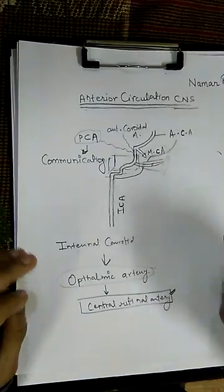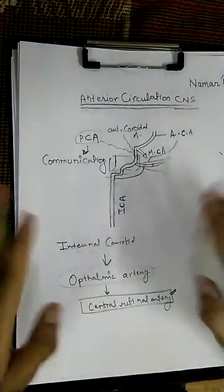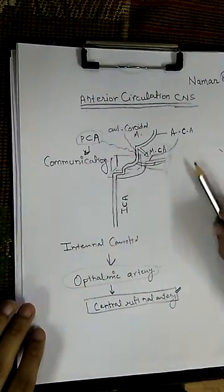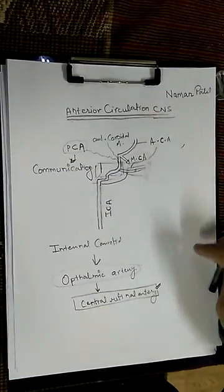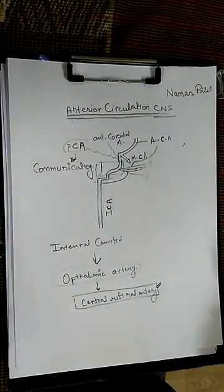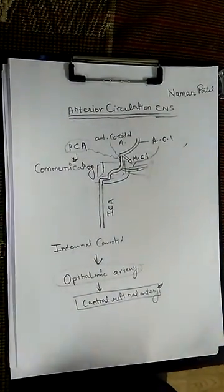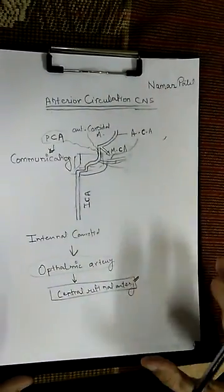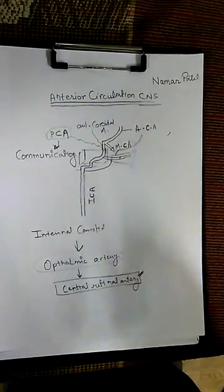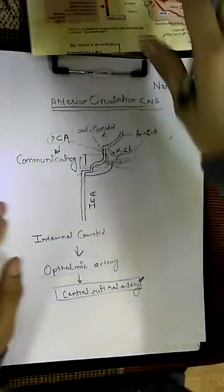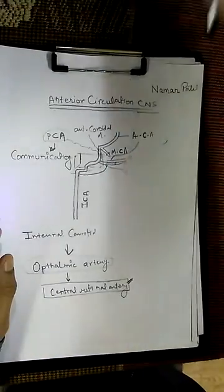All of this — the entire anterior circulation — is actually happening in the subarachnoid space of the brain. This is a very major point so you must remember it: everything is happening in the subarachnoid space.